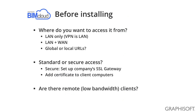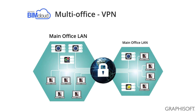Before installing BIMcloud, please consider the following: Where do you want to access your BIMcloud from? Do you need secure access or are you satisfied with regular HTTP communication? How many offices do you have? You may need to install BIMcloud in the remote locations. Here is a simple multi-office layout where the offices are connected by a Virtual Private Network or VPN. In IT terms, this means that these offices are located on the Local Area Network and does not require any special setup.